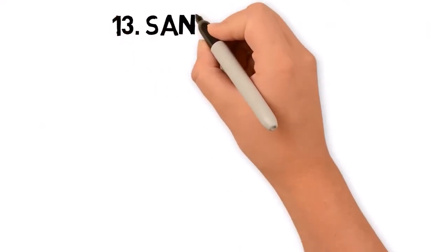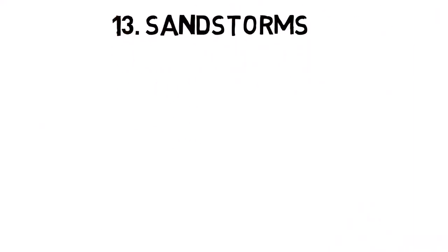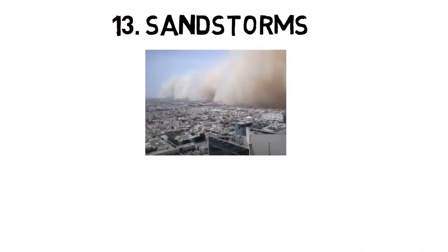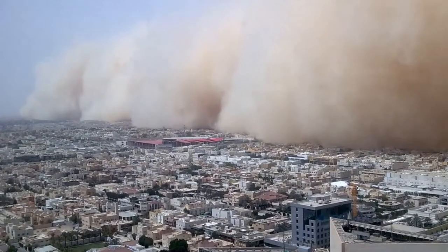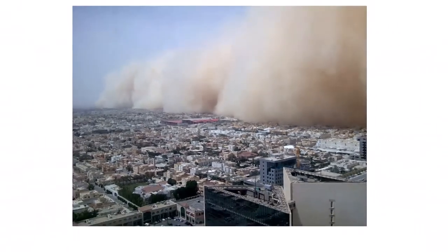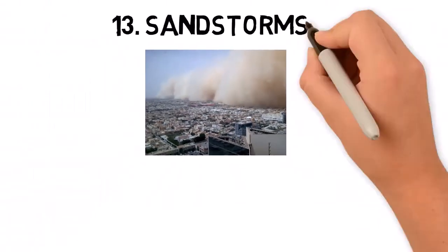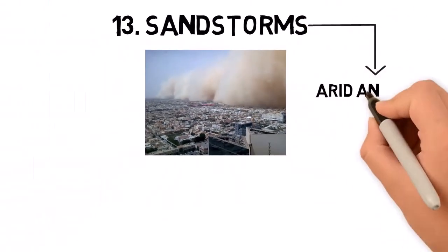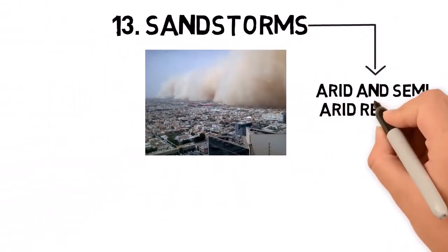Sandstorms, also known as dust storms, occur when strong winds lift large amounts of sand and dust from the ground into the air, creating a dense cloud that reduces visibility. Sandstorms are common in arid and semi-arid regions.